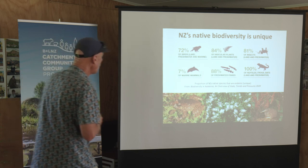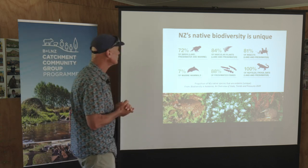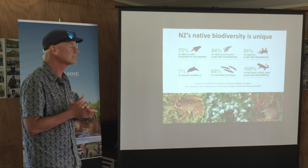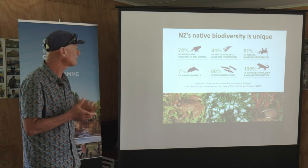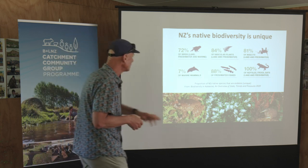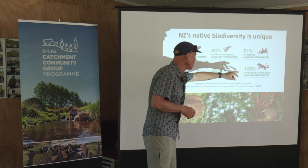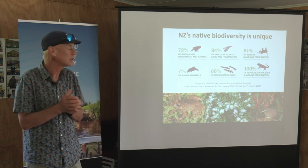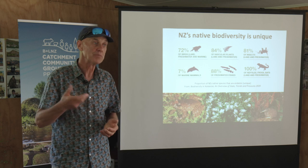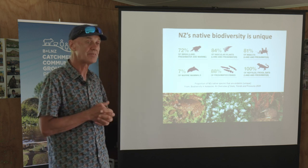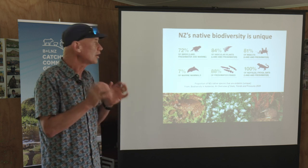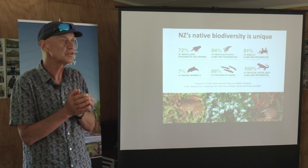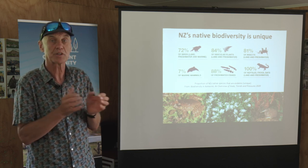If we look at the whole country, about 72% of our birds are endemic to New Zealand — they only occur in New Zealand. 84% of our vascular plants, 81% of our insects, most of our freshwater fish, all of our reptiles, frogs, and bats — they only occur here. It's different for our marine mammals, of course, because they move around the oceans and we share them with other countries. So not only do we have a lot of biodiversity in New Zealand, most of it only occurs here, which means we can only look after it in New Zealand.